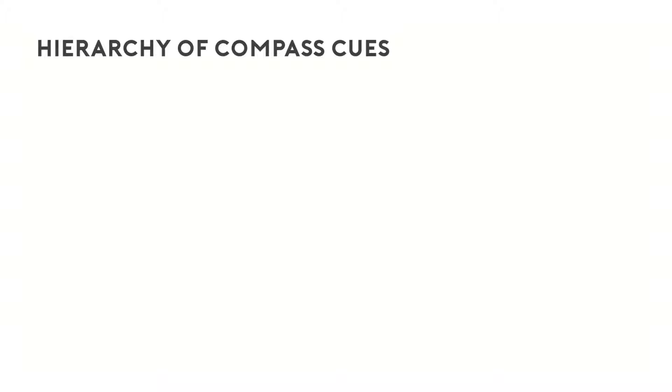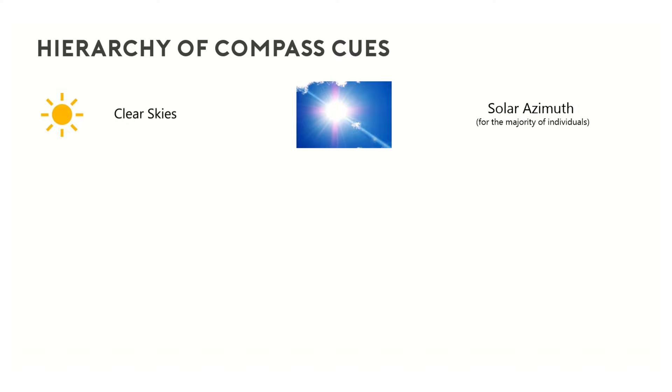From our experiments, we can propose a hierarchy of orientation cues that Neogonodactylus oerstedi relies upon during path integration. First, the sun seems to be the primary orientation cue these animals use to orient. Next, mantis shrimp rely on celestial polarization patterns and potentially other celestial cues for orientation. Finally, these animals appear to rely on idiothetic information to orient when celestial cues are absent, allowing for a robust navigation strategy in an aquatic environment.